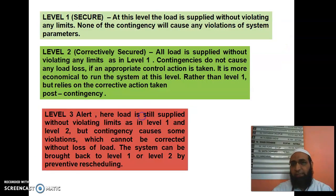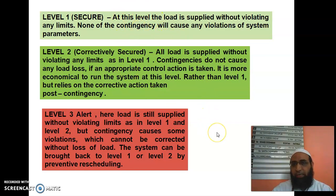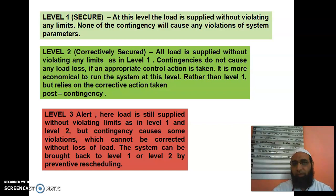Now let us see the 6 levels of security. Level 1 is the secure level — shown in green to indicate it is safe. At this level, the load is supplied without violating any limits. None of the contingencies will cause any violations of the system parameters. That is level 1, the secure level.